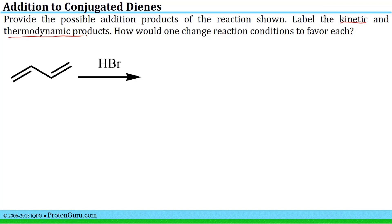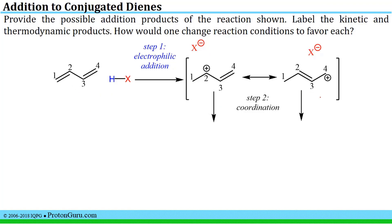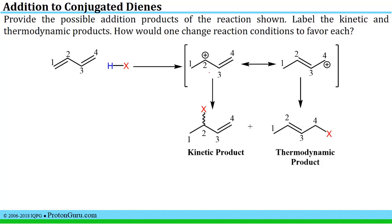We're also asked how we would change reaction conditions to favor each of these products. The first step is to draw the carbocation resulting from electrophilic addition — you can draw it reacting with the acid or just with the proton itself, as in the previous examples. That will lead to this initial carbocation which has an additional resonance contributor. Next, we can do the coordination of the bromide to either carbon 2 or carbon 4, the two positively charged carbons, giving the 1,2 addition product or the 1,4 addition product.